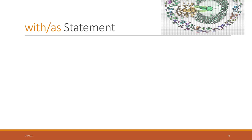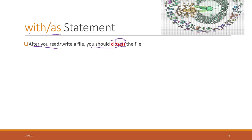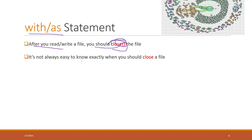Now let's talk about the with-as statement. When we open a file with the open function, we should always close the file using the close function — otherwise the file will remain in Python memory, which is not best practice. However, it's easy to forget to call the close function and hard to know exactly when to close. That is why we have the with-as statement, which guarantees Python will close your file automatically.